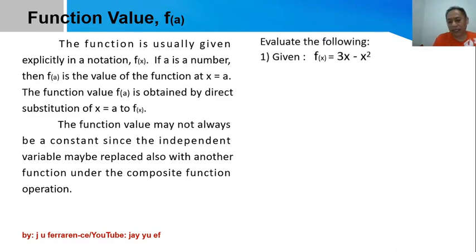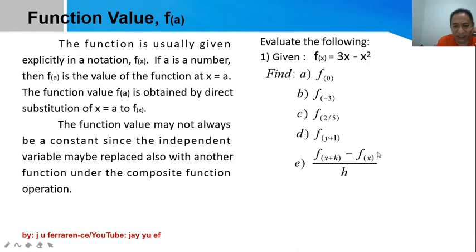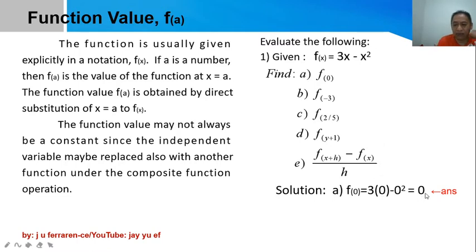Here is an example in the evaluation of function value. We are given a function and asked to determine the function values for different values of x. Notice that in parts a, b, and c the values of x are all constants, while in part d x is replaced with another function, and in the last part it is a difference of two function values over a certain expression x. Let's try working with part a — substitute 0 into the function to get the function value. With x = 0, substitute into the function: 3 times 0 minus 0 squared.